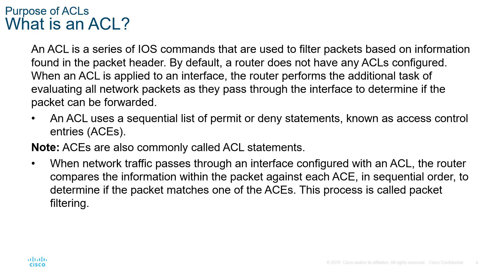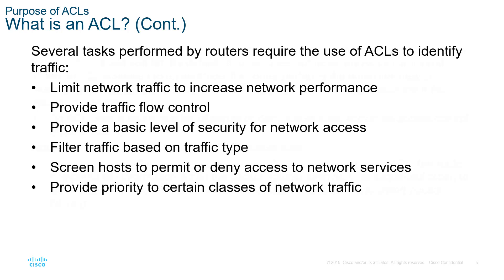When you configure an ACL, the first ACE will be the first filter, then the second ACE will be the second filter, and so forth. There is an inherent deny at the end — if none of the above entries filter, there will be an implicit deny at the very end blocking everything. There are several tasks performed by our devices that use ACLs: limit network traffic to increase performance, traffic flow, security, filter traffic types, screen hosts that permit certain services, and prioritize certain classes of network traffic.